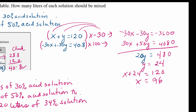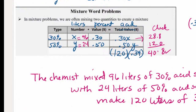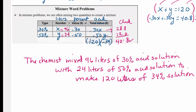Substituting y equals 24 back into x plus y equals 120 gives x equals 96. The check in the table confirms the answer. The chemist mixed 96 liters of 30% acid solution with 24 liters of 50% acid solution to make 120 liters of 34% acid solution.